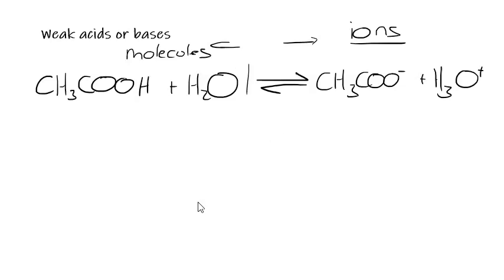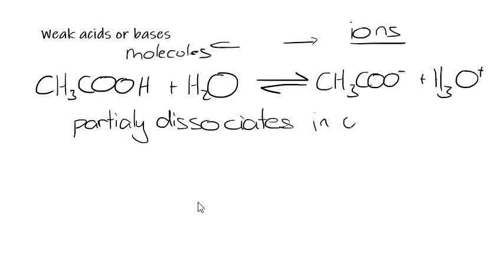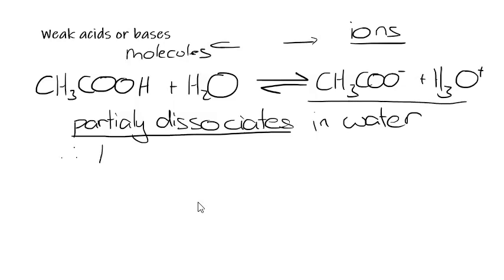So the more uncharged molecules we have, the less conductive the solution is going to be. Because ethanoic acid is a weak acid, it only partially dissociates in water. That's a key phrase for conductivity questions — ethanoic acid only partially dissociates in water to form its ions, and therefore there's a low concentration of ions. So ethanoic acid does conduct electricity, but just not very much — it has a low conductivity.